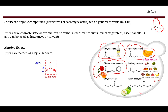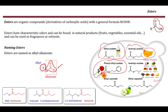Esters are named as alkyl alkanoates. When we name esters, we distinguish between two parts: the first part includes the R group and the carboxylate group — this is named the alkanoate part — and then we have the alkyl group bonded to the oxygen. For example, in this ester, we start by naming the alkyl group connected to the oxygen: two carbons means ethyl, and one-two-three-four-five means pentanoate — so this is ethyl pentanoate.